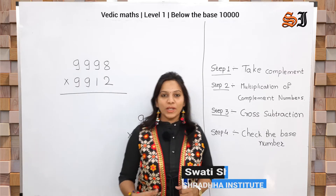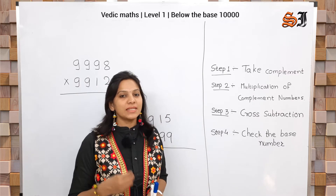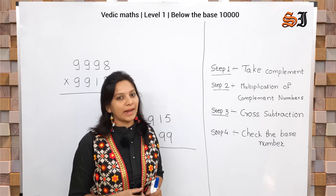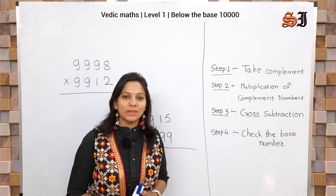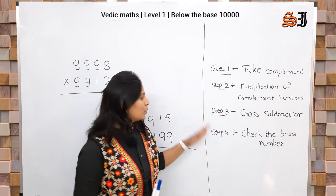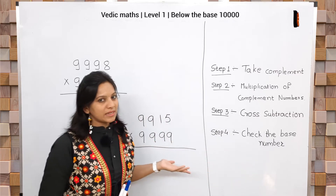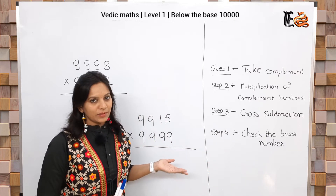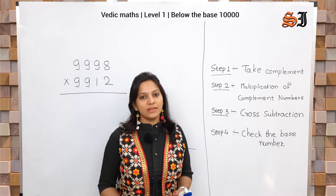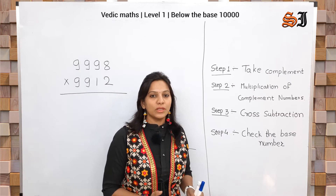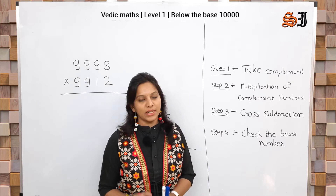The first topic is below the base 100, then below the base 1000, and next is below the base 10,000. The same rules apply in below the base 100,000.